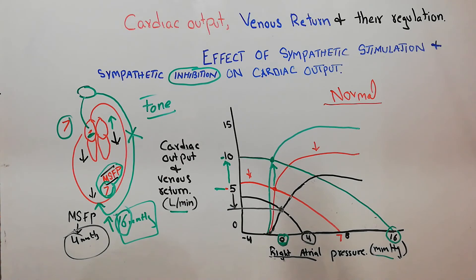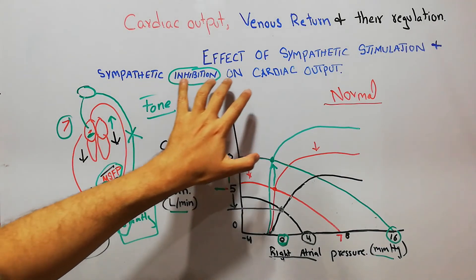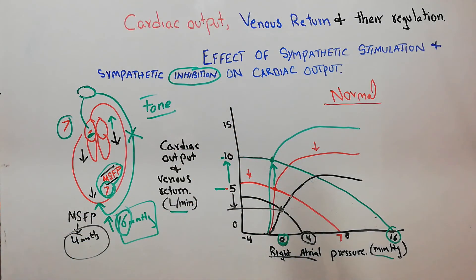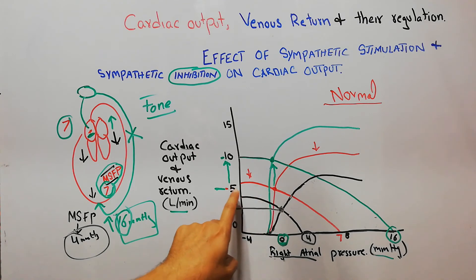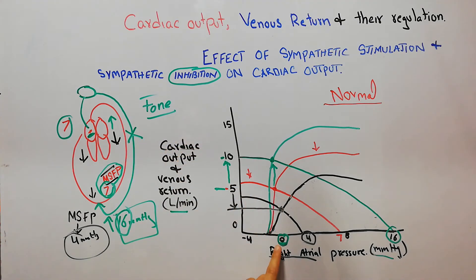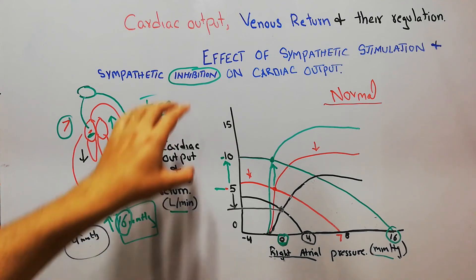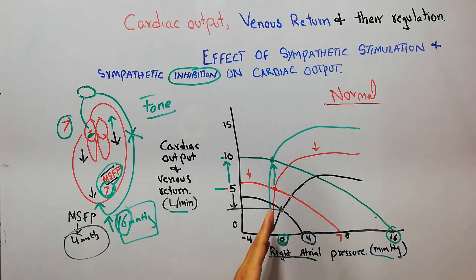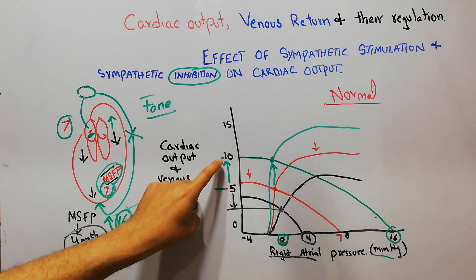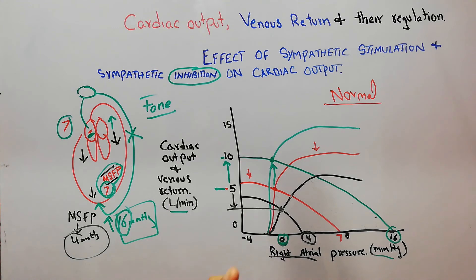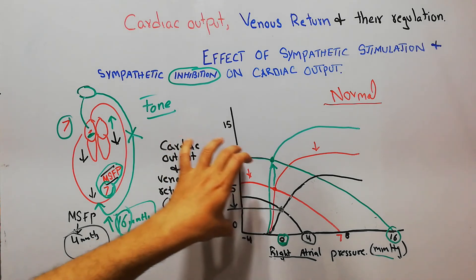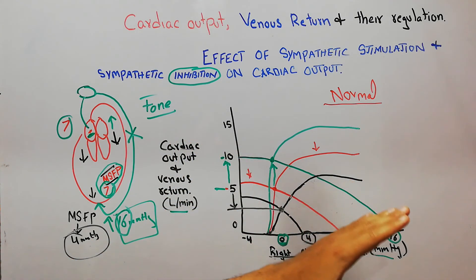To summarize the effect of sympathetic stimulation and inhibition on cardiac output: normally, cardiac output and venous return curves meet at 5 liters per minute, right atrial pressure is 0 mmHg, and mean systemic filling pressure is 7 mmHg. When sympathetic stimulation occurs, both curves shift upward — cardiac output and venous return both increase — while right atrial pressure remains the same. The mean systemic filling pressure increases, so to bring venous return to zero, right atrial pressure has to increase more.